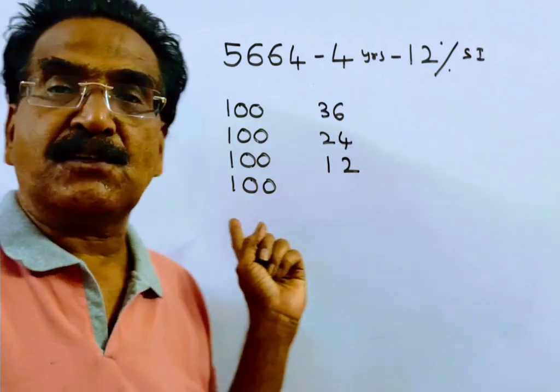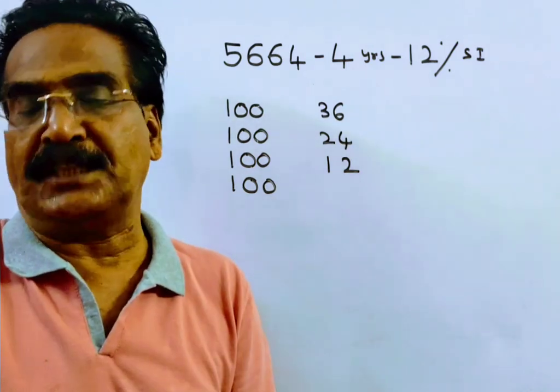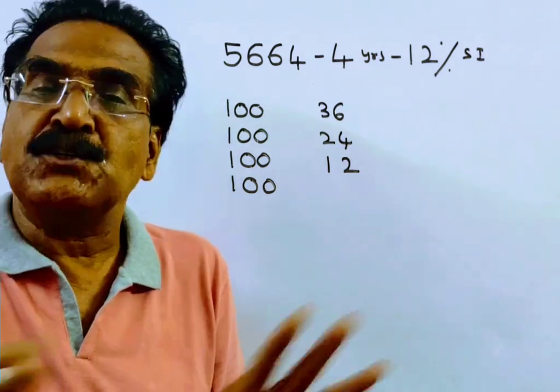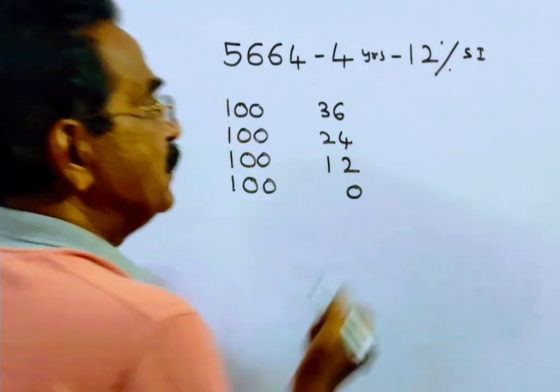And friends, the installment you pay at the end of the fourth year, the period is over, so it fetches no interest, that is 0.